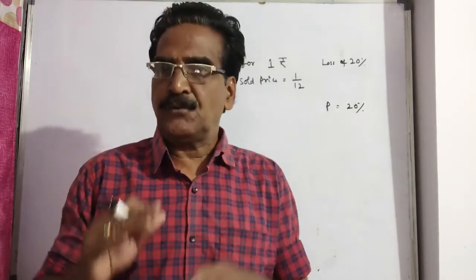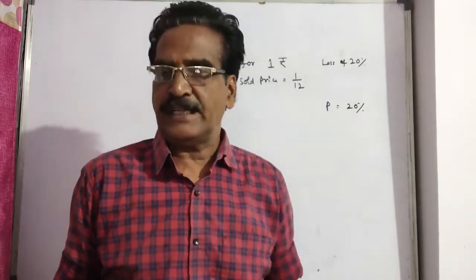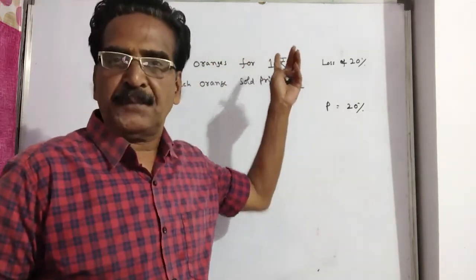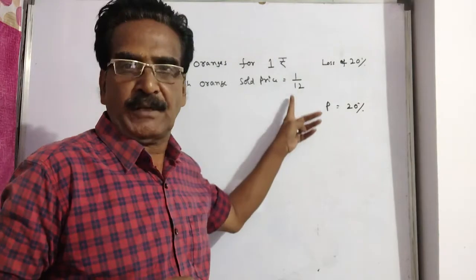How many for a rupee should he sell to gain 20%? He is selling 12 oranges for 1 rupee, that means each orange costs 1 by 12.